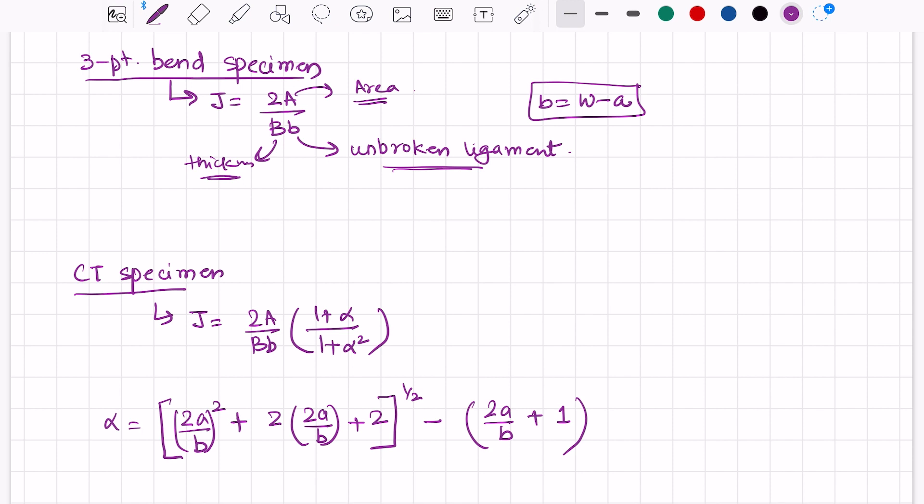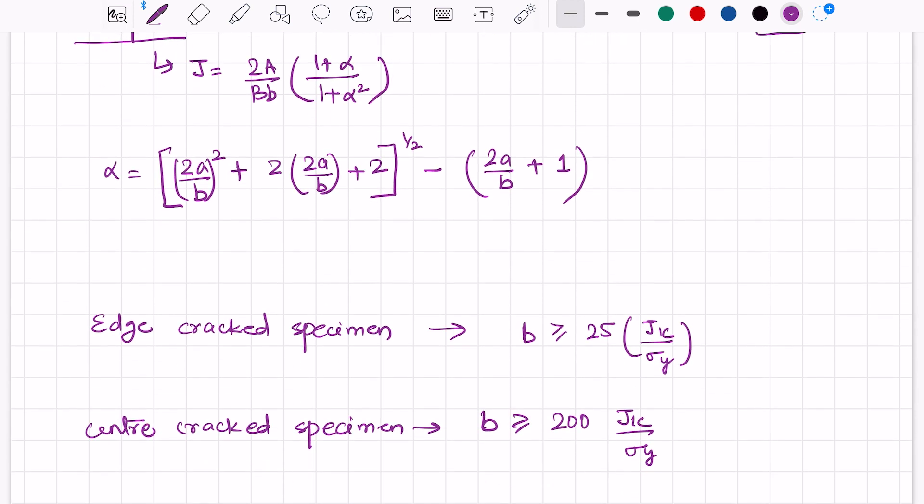Now, after calculating the J value, we should ensure whether it fits the criteria of J-integral. For that, there is a condition for the crack ligament: the unbroken ligament should be more than 25 times J_1c divided by sigma_y for edge-cracked specimens. If it's a center-cracked specimen, this unbroken ligament should be more than 200 times J_1c divided by yield strength. If it follows this condition, only then the value of J-integral can be accepted. If this condition is not followed, then the obtained J-integral will not be accepted, and we should go for other testing to find the fracture toughness value.